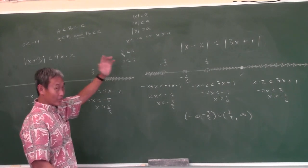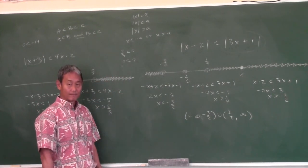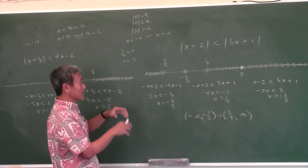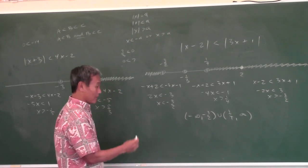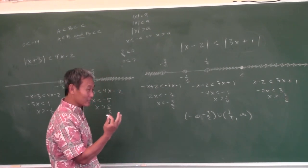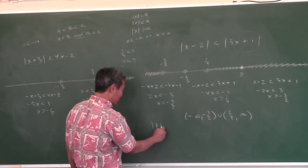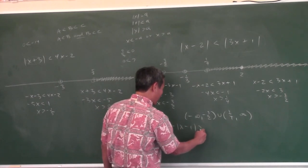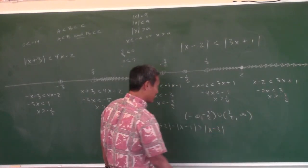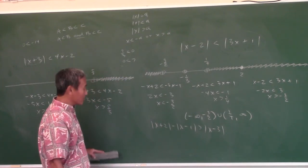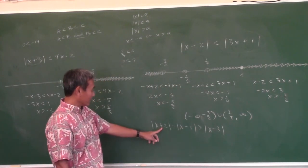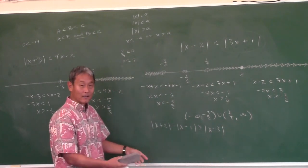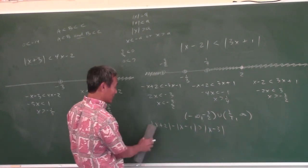So this method — do you guys understand? This method works all the time. Whatever you have inside your absolute value, put that zero on the number line. If you had three absolute values on one of tonight's homework problems, three numbers go on the number line.